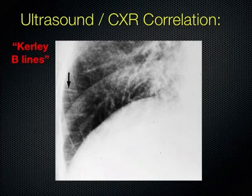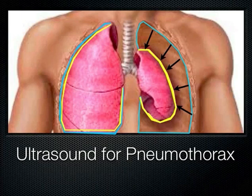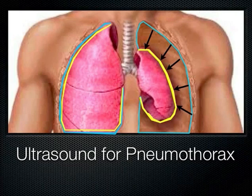Moving on to ultrasound of pneumothorax. Normally your lung is inflated like a balloon, covered with visceral pleura, while the chest wall is covered with parietal pleura — normally adhered together almost like a suction with a thin layer of fluid between the two. If any air gets in between those two layers, the lung collapses — you lose the suction. A pneumothorax is when the lung has collapsed and air has entered the chest cavity. Pneumo meaning air, thorax meaning chest.